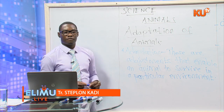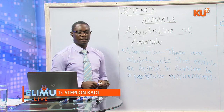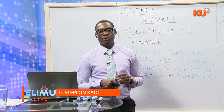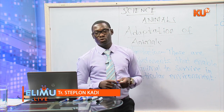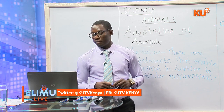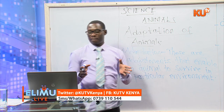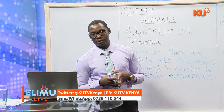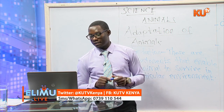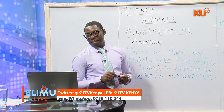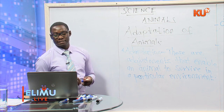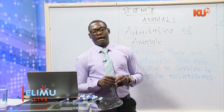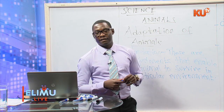Now let's look at adaptations of carnivorous animals. Carnivorous animals feed entirely on flesh, so their adaptations must help them feed on flesh. The teeth should be able to tear food, crush bones, and chew meat properly. Number one: they have sharp and pointed incisors used for catching and holding prey. Unlike herbivores with chisel-shaped incisors, carnivorous animals have sharp and pointed incisors.